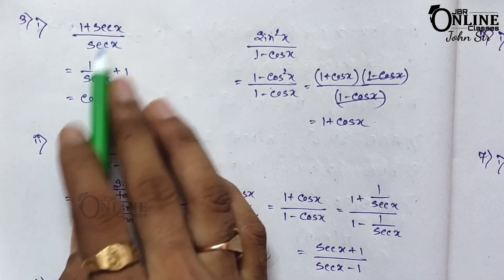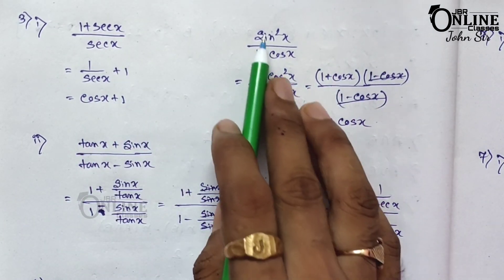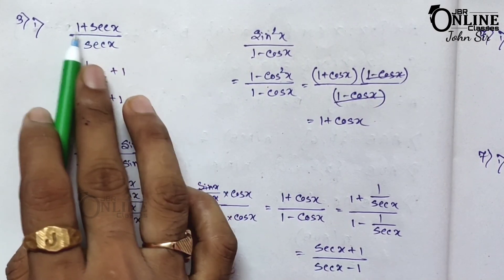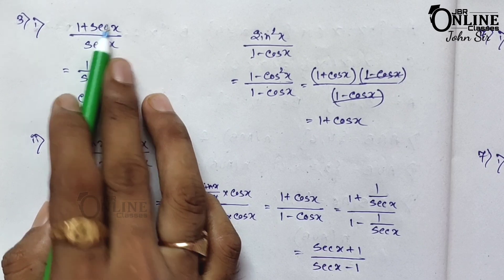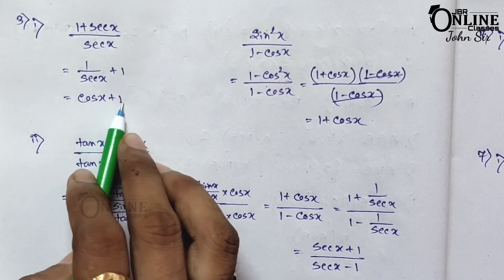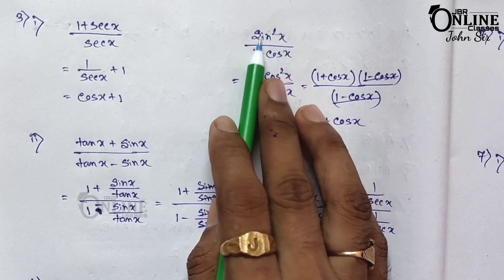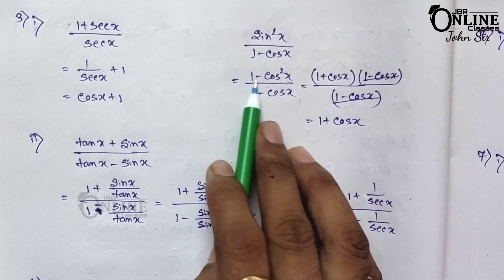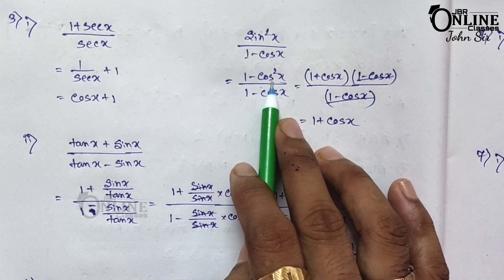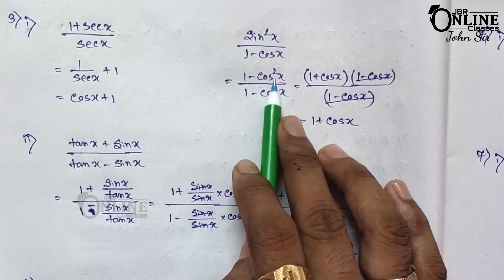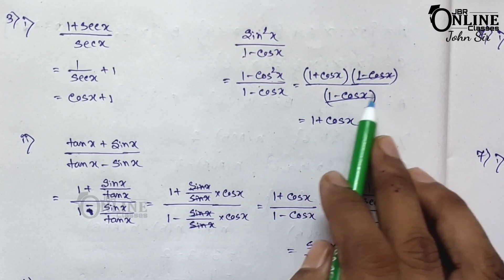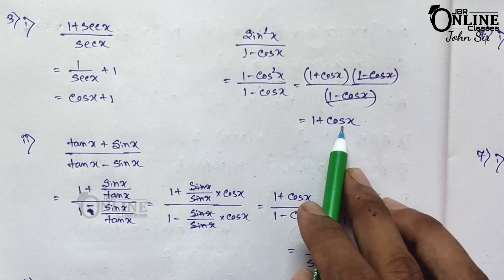Sum number 3: (1 + sec x)/sec x — prove it equals sin²x/(1 − cos x). Dividing: 1/sec x + sec x/sec x gives cos x + 1. Now sin²x means 1 − cos²x, so we have (1 − cos²x)/(1 − cos x). Applying the formula a² − b² = (a+b)(a−b), the (1 − cos x) cancels, giving final answer 1 + cos x.